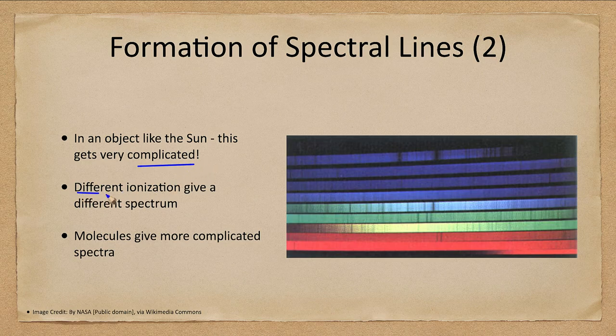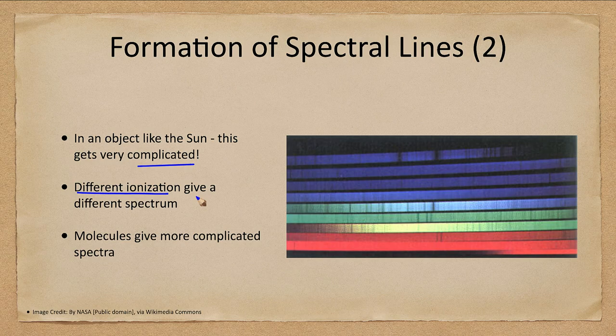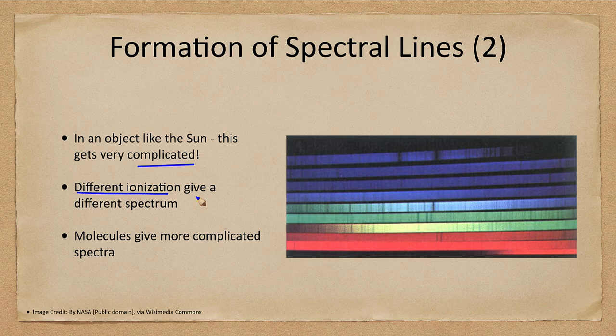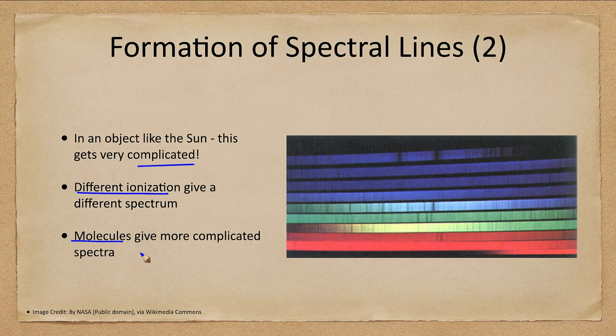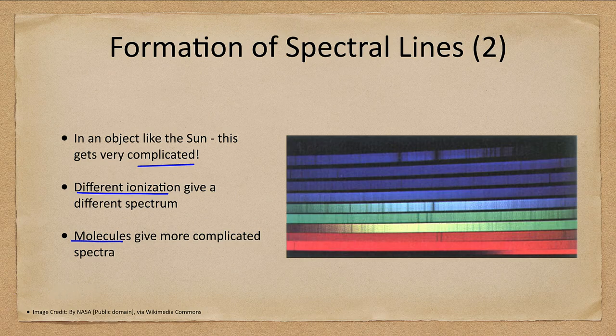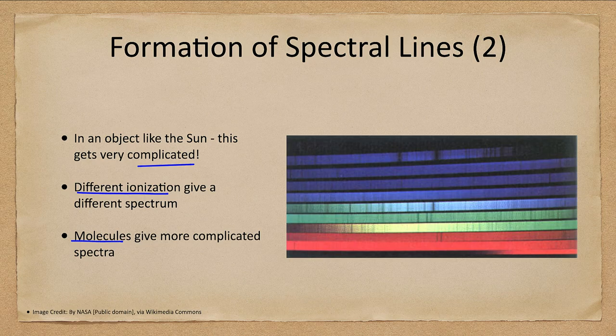You also have that each ionization will give you a different spectrum. So calcium, neutral calcium will give you one spectrum. Calcium with one electron removed will give you another spectrum. Calcium with two electrons removed will give you a completely different spectrum. And when you start looking at things like molecules, you will get even more complicated spectra. Molecules will absorb bands of light, so complete bands taken out. And these are very prominent in low temperature stars. And again, it gets much more complicated than the simplified version that I've talked about earlier.